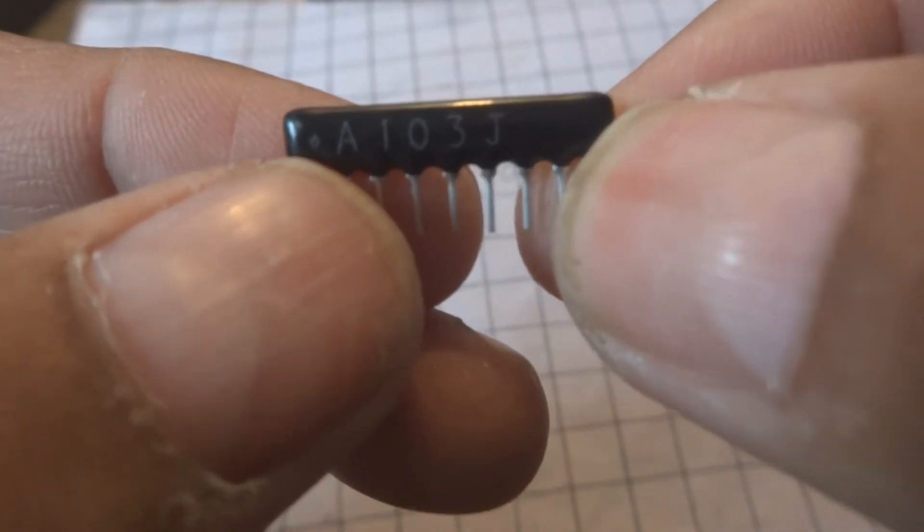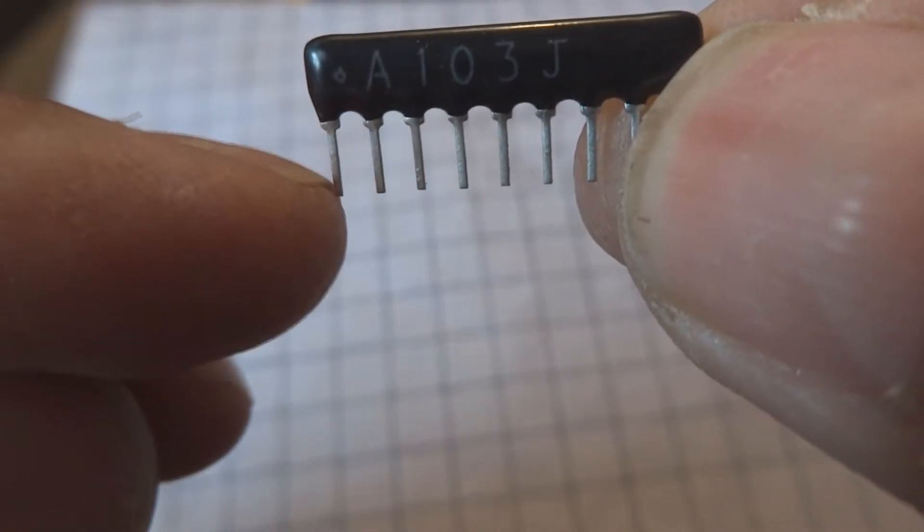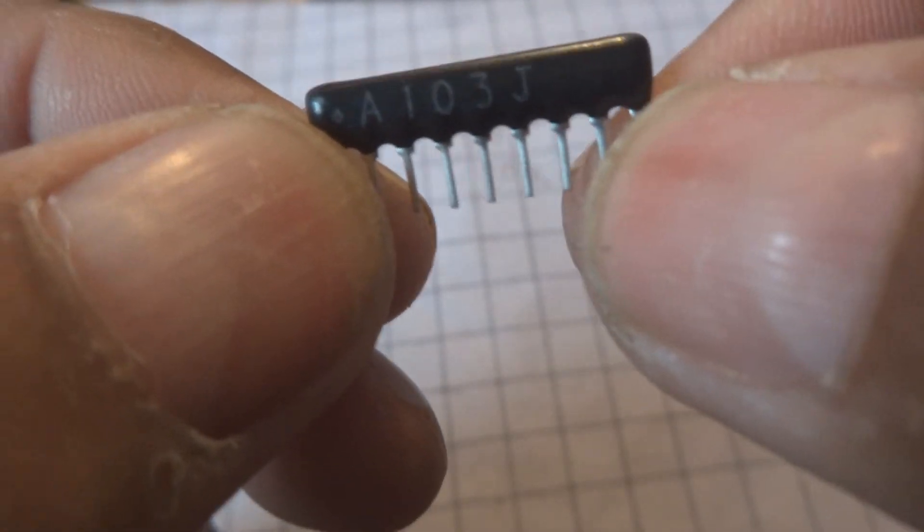This one where you can see this dot here, the pin close to the dot is common with all these resistors. So 9 pins and 8 lines, 8 resistors are there.